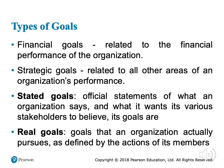The third type is called stated goals — these are the official statements the organization issues to tell people what its goals are. It might or might not reflect the real goals. The real goals are the goals the organization actually pursues, as defined by the actions of its members. So an organization may have real goals they actually work on, and stated goals — what they want stakeholders to believe.